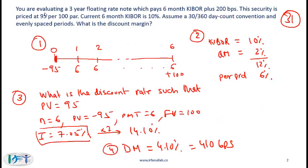Let's read this together. You are evaluating a three-year floating rate note which pays six month Kybo plus 200 basis points. This tells us immediately that the payment is semi-annual, three-year floating rate note so that means we have six semi-annual periods. 200 basis points, this is the quoted margin.